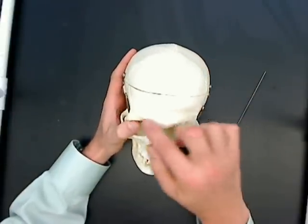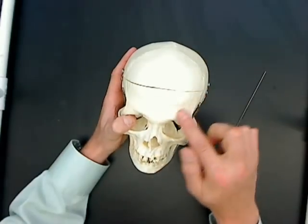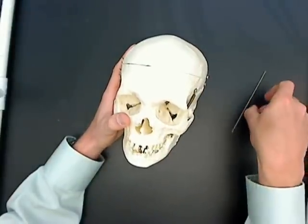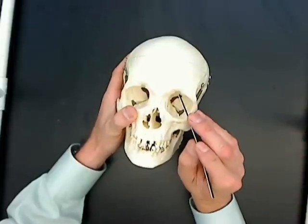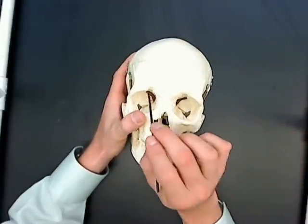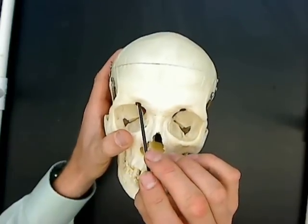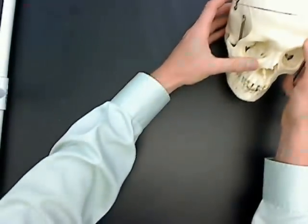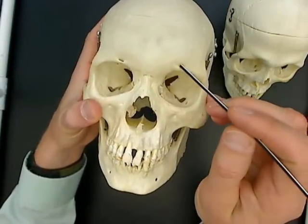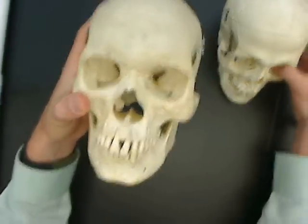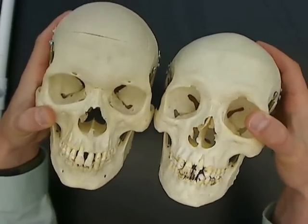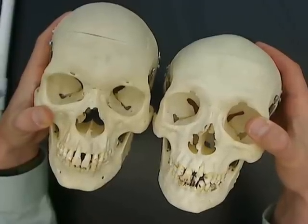Beginning, we have the frontal bone — it makes up your forehead and also comes down to the very top part of your eyes. For features, this skull has supraorbital notches. This other skull has supraorbital foramen — a hole right there and right there. So depending on your particular anatomy, you may have supraorbital foramen or you may have supraorbital notches.